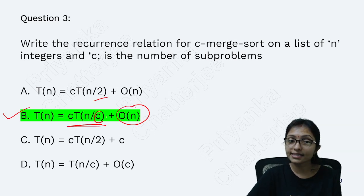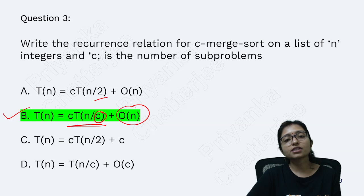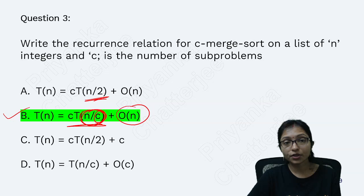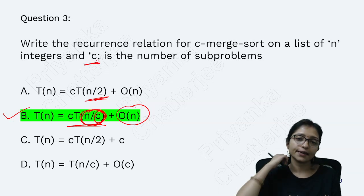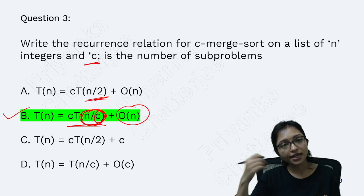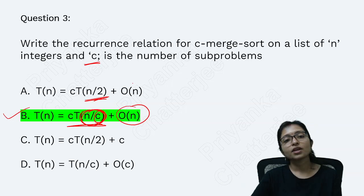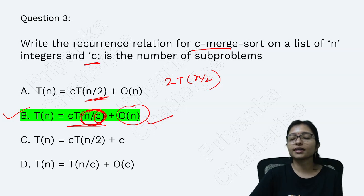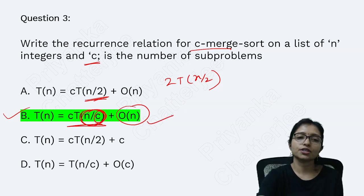So the answer is C·T(N/C) then order of N — N/C, not N/2, because C is both the number of sub-problems and the size of the sub-problem. Normally we use T(N/2), but this is C-marked sort, so the size of the sub-problem will also be N/C. That's why this is your answer. Very good question.